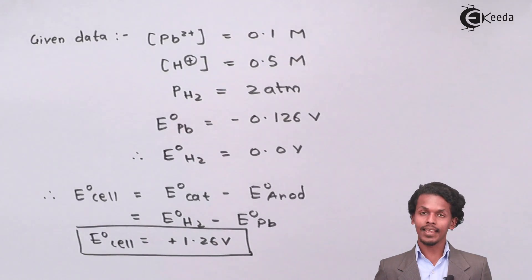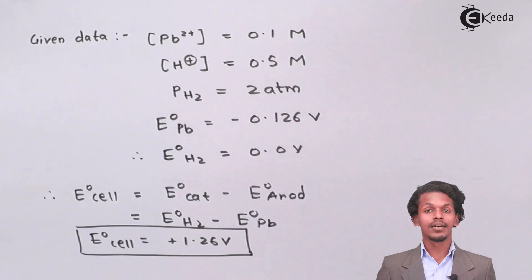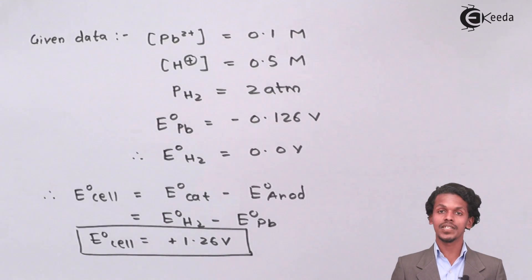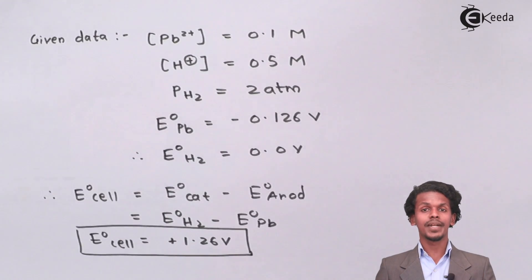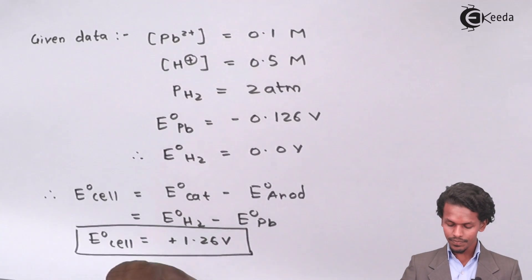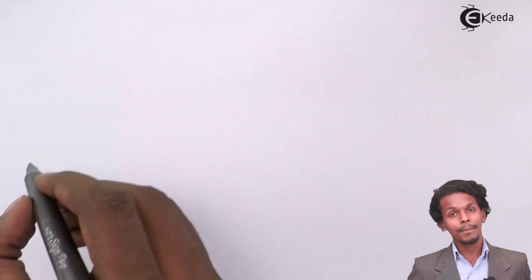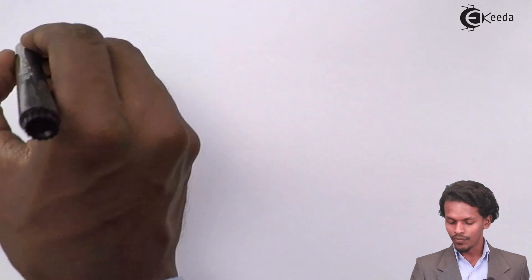In this case, we have got an idea that H2 is acting like a cathode while Pb is acting like an anode. First of all, we should write the cell formula so that the cell reaction can also be calculated.